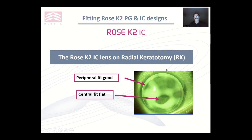Here's an IC on radial keratotomy. Difficult to fit, and sometimes it's very hard to stop staining over the scar tissues where we have the cuts. In general, IC can be used as an option for RK, but I prefer to use XL which vaults over most of this area and doesn't tend to rest on those high areas.